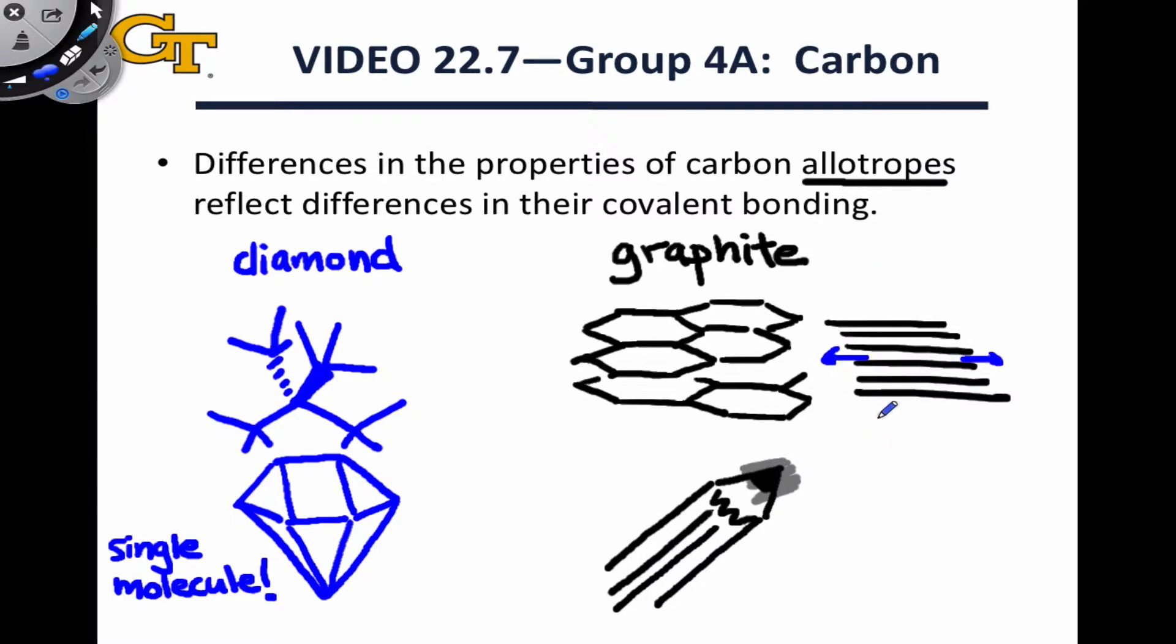Graphite has this kind of oily feel to it. It's powdery and it spreads out easily. That's because these sheets can easily move past one another and spread out. There is some attraction between the sheets, but it's very weak compared to the covalent bonds that we find in the diamond structure.